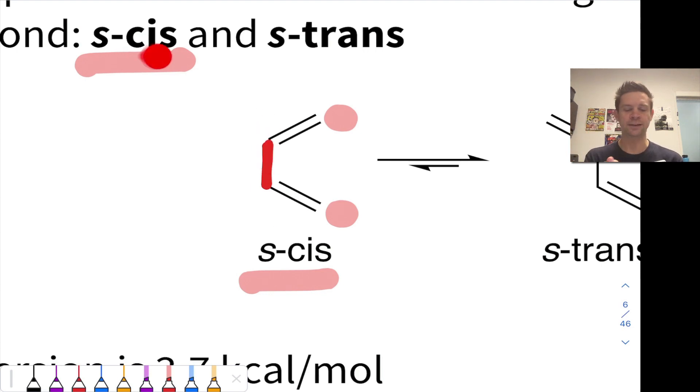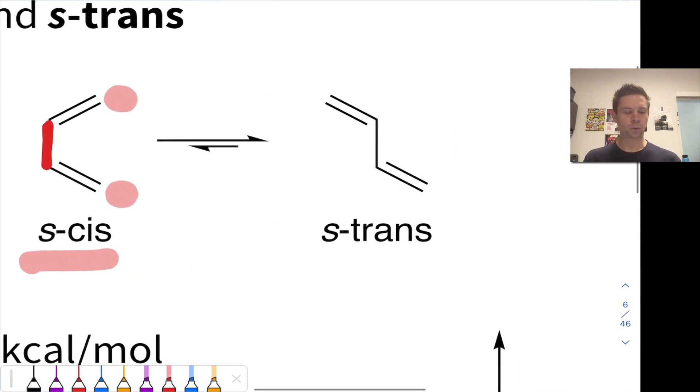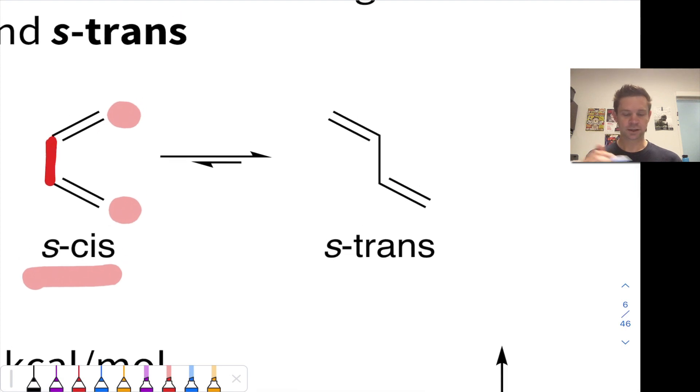They're sort of cis-oid to each other, we might say. They're on the same side of that single bond. If I rotate around the central C-C single bond so that one of the double bonds flips to the other side, that gives the S-trans conformer.